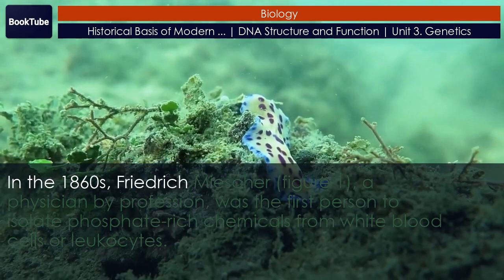Griffith injected the live R strain into mice and they survived. In another experiment, when he injected mice with the heat-killed S strain, they also survived. In a third set of experiments, a mixture of live R strain and heat-killed S strain were injected into mice, and to his surprise the mice died. Upon isolating the live bacteria from the dead mouse, only the S strain of bacteria was recovered. When this isolated S strain was injected into fresh mice, the mice died. Griffith concluded that something had passed from the heat-killed S strain into the live R strain and transformed it into the pathogenic S strain, and he called this the transforming principle.